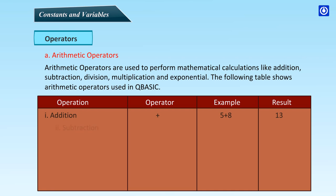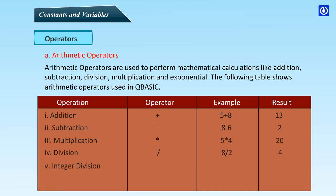The arithmetic operators in QBasic are: Addition (+), example 5+8=13; Subtraction (-), example 8-6=2; Multiplication (*), example 5*4=20; Division (/), example 8/2=4; Integer division (\), example 9\2=4; Exponential (^), example 4^3=64.